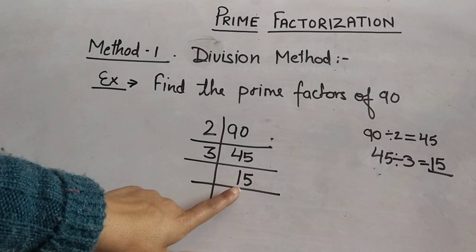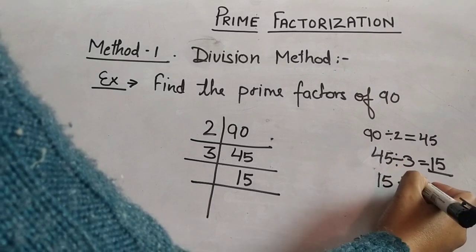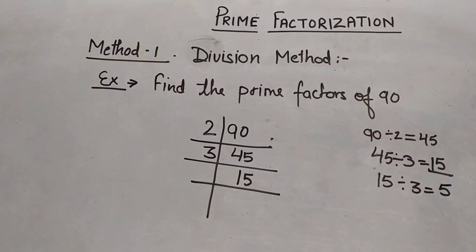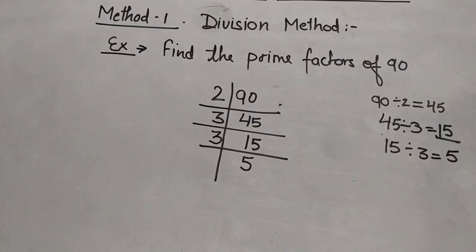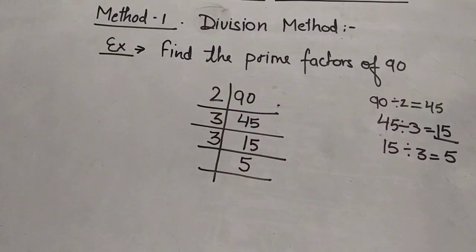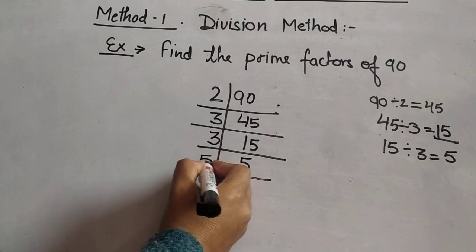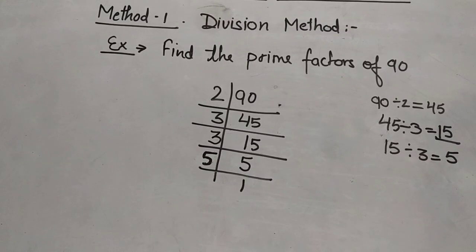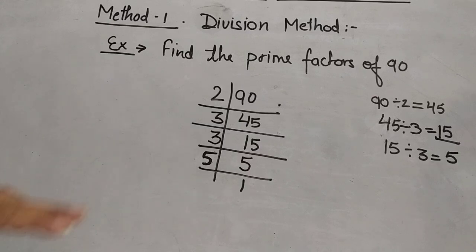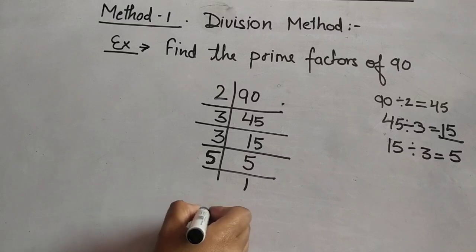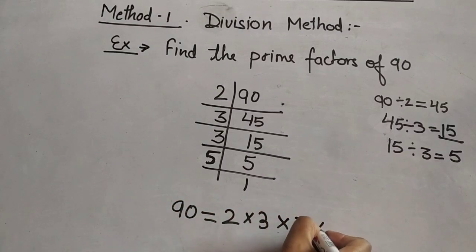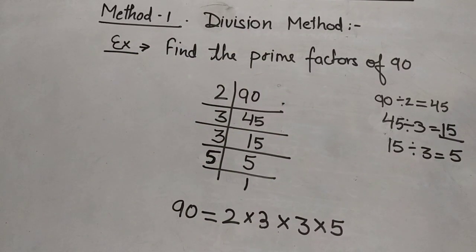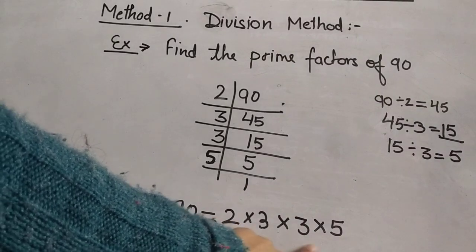Now 15 is also divisible by 3, so we divide it by 3 and the quotient is 5. Now 5 is itself a prime number, so we divide it by 5 only. We divide a number until we get 1 at the end. We then write the prime factors of 90 as the product of all prime factors on the left side: 90 = 2 × 3 × 3 × 5.